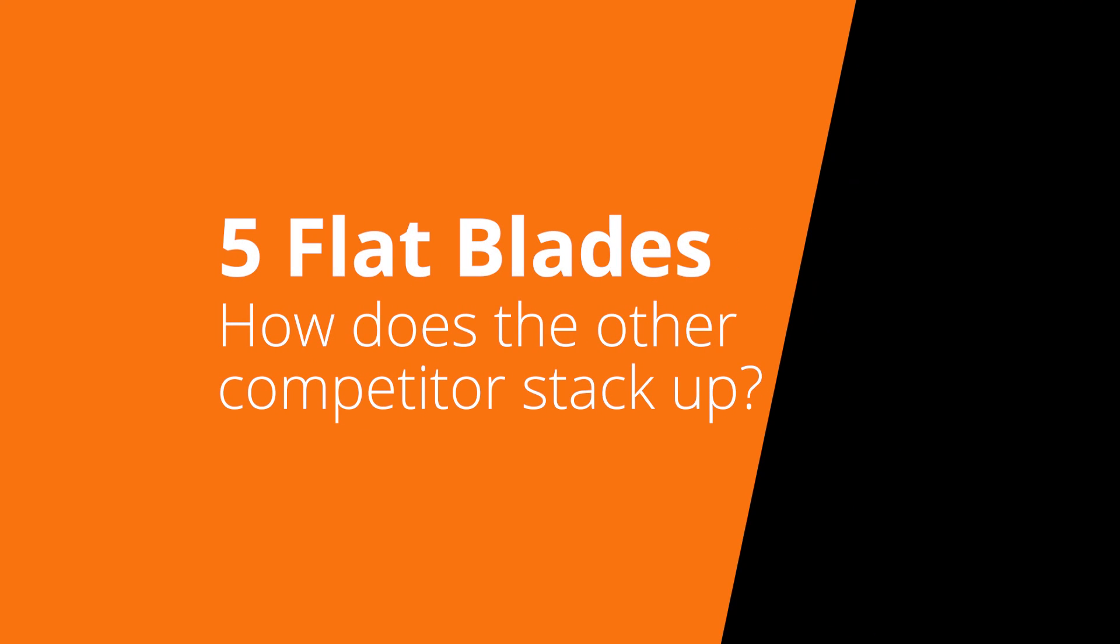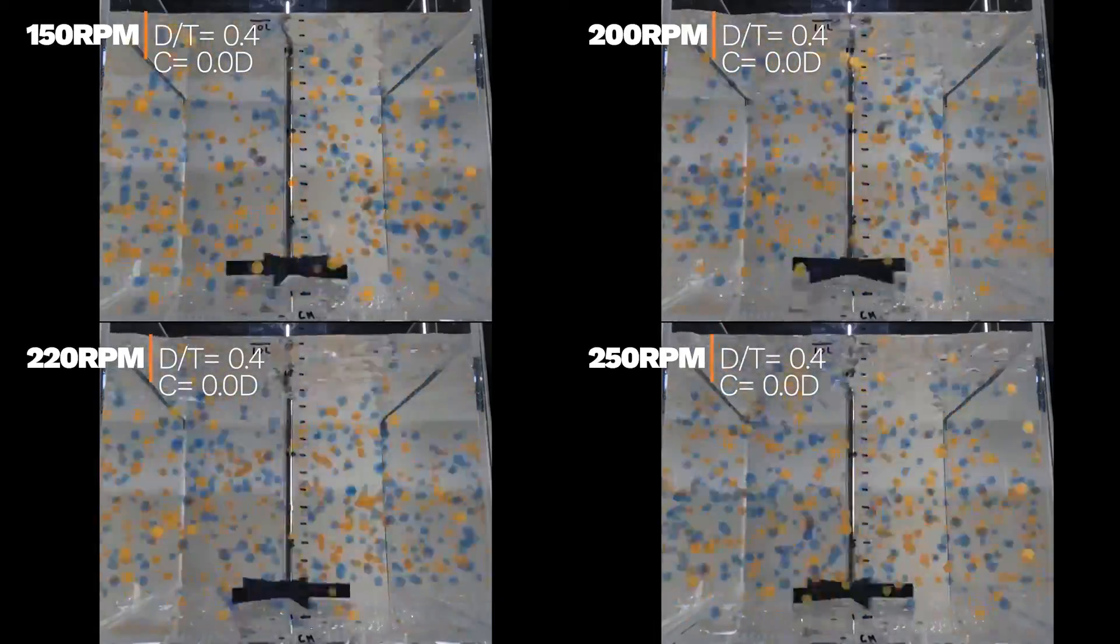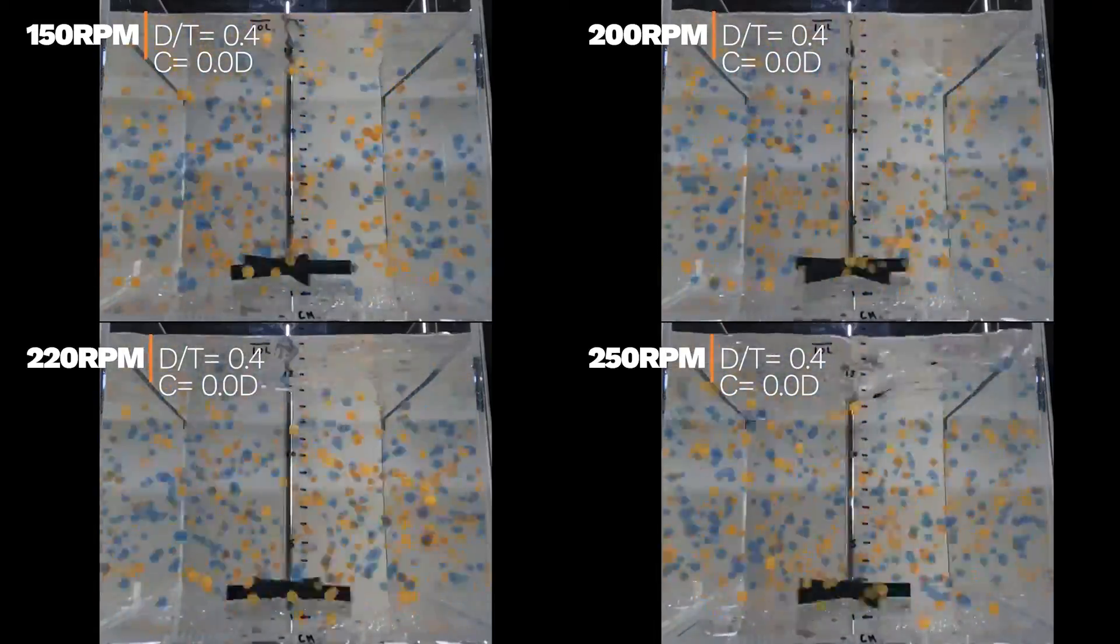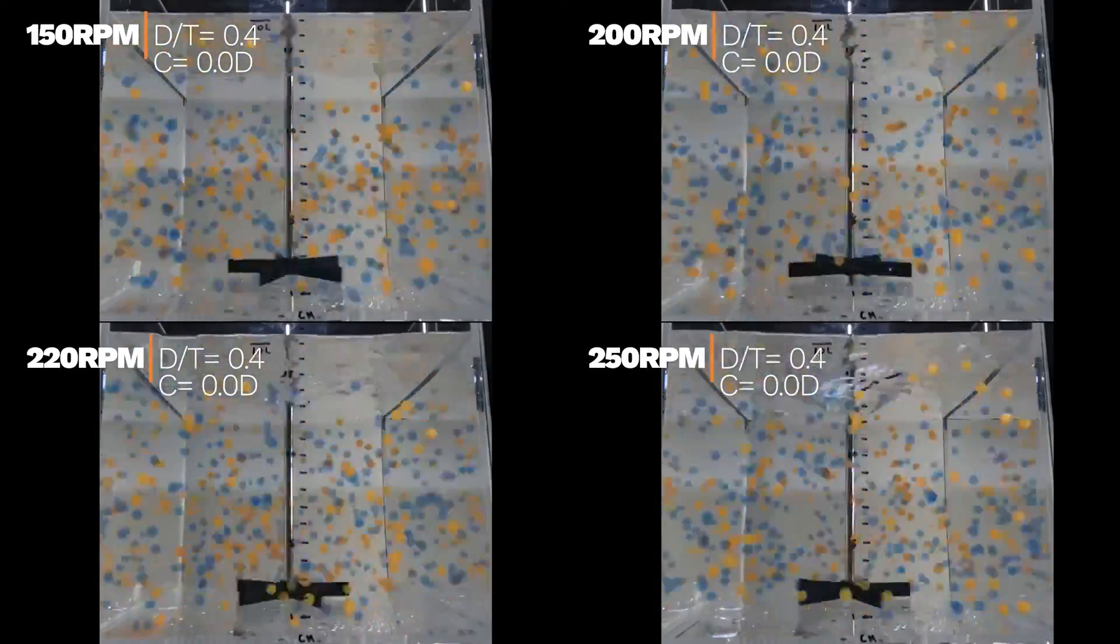Next, we ran tests on a 5-blade agitator used by a competitor with a round tank. Notice how effective the agitator is at suspending particles. Also notice the greater turbulence at the interface when compared with the previous 4-blade impeller.